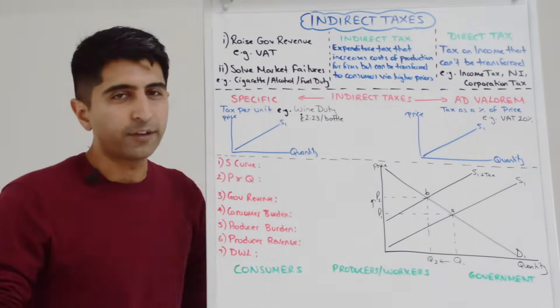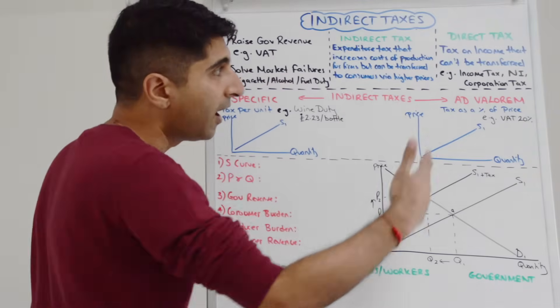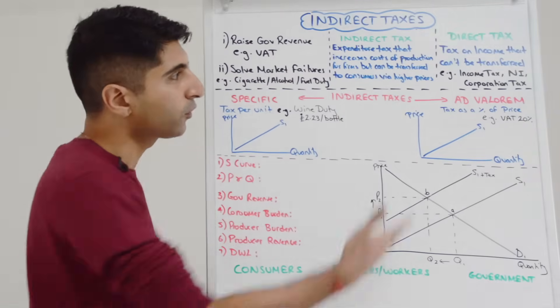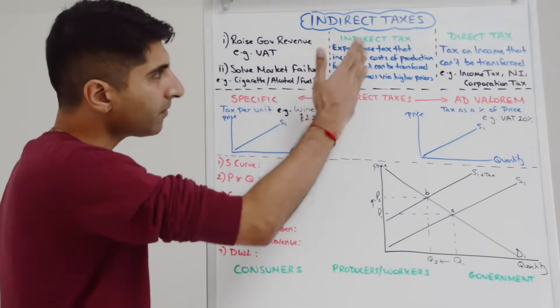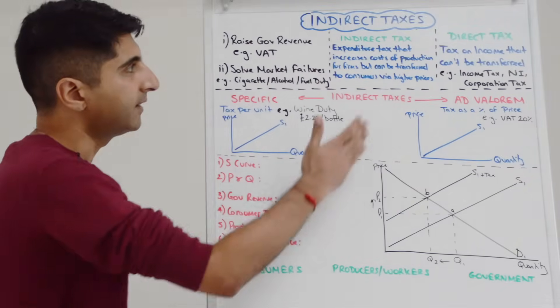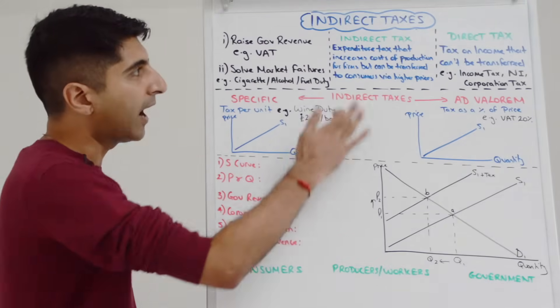Direct taxes are simply taxes on income that can't be transferred to anybody else. Good examples are income tax, national insurance, corporation tax. These taxes directly tax income, but we're focusing on indirect taxes and we can see from this very precise definition exactly what indirect taxes are.